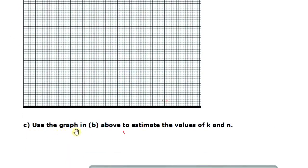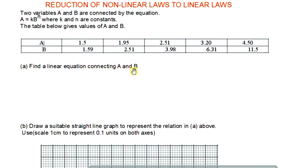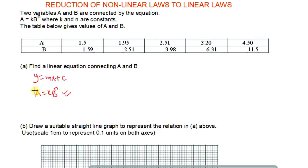Lastly, part c: use the graph in b above to estimate the values of k and n. Moving to the first part, we are required to find a linear equation connecting a and b. For a linear equation it should always be in the form y equals mx plus c. The equation we are given is a equals k times b raised to n, which is nonlinear, so we need to express this in linear form by introducing logarithms.